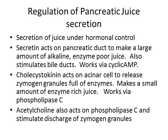Cholecystokinin, on the other hand, acts on the acinar cells of the exocrine pancreas via phospholipase C, which breaks up the zymogen granules so they release their enzymes into the pancreatic duct. If you were to give cholecystokinin without secretin, you'd get a small volume of juice but it would be enzyme-rich. Acetylcholine from the parasympathetic nervous system also works via phospholipase C and stimulates discharge of zymogen granules, which is why simply the sight or thought of food will already start preparing pancreatic juice.